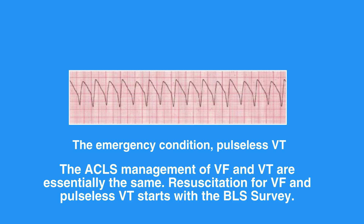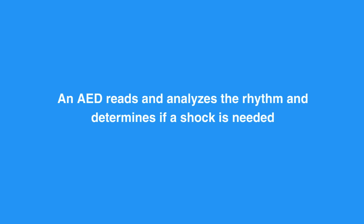Pulseless VT and resuscitation for VF starts with the BLS survey. An AED reads and analyzes the rhythm and determines if a shock is needed. The AED is programmed to only prompt the user to defibrillate Pulseless VT and VF rhythms. The machine does not know if the individual has a pulse or not — this is the primary reason you should not use an AED in someone with a palpable pulse.